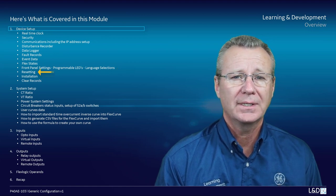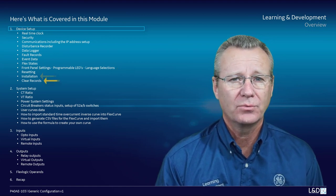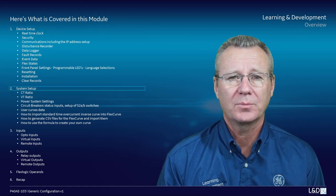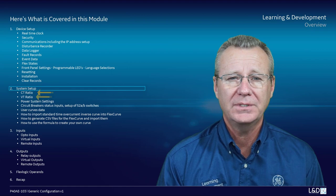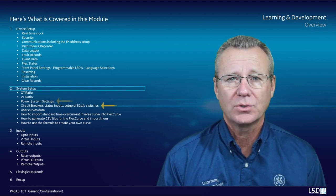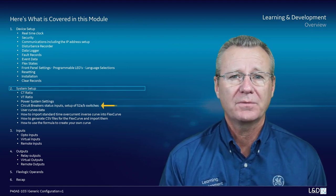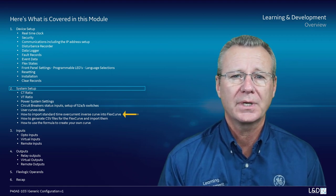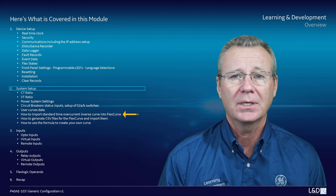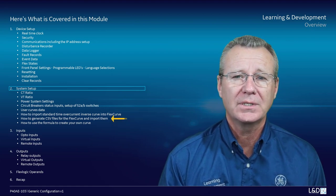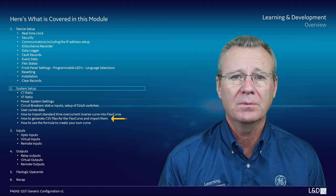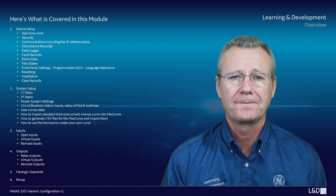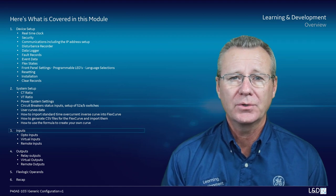In section 2 under system setup, we're going to look at CT ratio, VT ratio, power system settings, circuit breaker status inputs, setup of 52A and B switches, user curves data, how to import standard time over current inverse curve into flex curve, how to generate CSV files for the flex curve, import them, and how to use the formula to create your own curves.